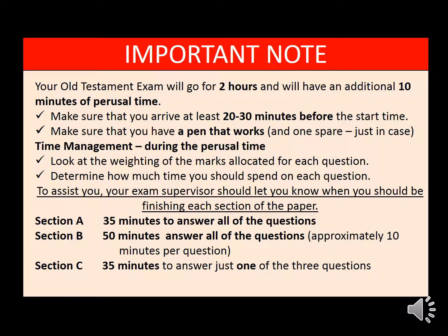For time management, during your perusal time look at the weighting of all the marks allocated for each question and determine how much time you should spend on each. Your exam supervisor should let you know when to move on to the next section. For Section A's 17 questions, don't spend more than 35 minutes — if you haven't finished, move straight to Section B and return if you have time. For Section B's four questions, spend around 50 minutes total, approximately 12 to 13 minutes per question.